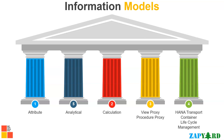We will understand how information models work and model some complex scenarios. As ABAP developers, you will be interested in learning how to consume these HANA views in ABAP programs — we will cover that too, including view proxies and procedural proxies. HANA views also have a different lifecycle management. We will see how to create an HTC, or HANA Transport Container, and how to move HANA views from development to quality and from quality to the production environment using HTC.